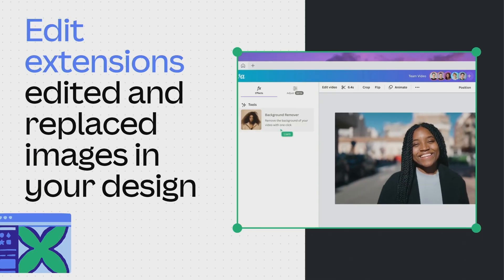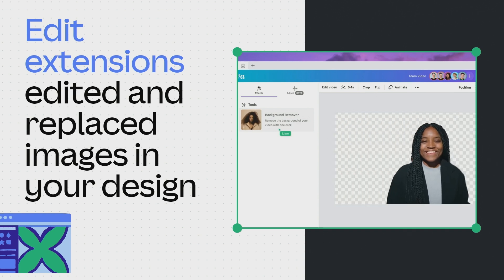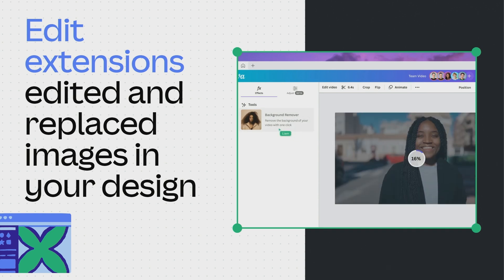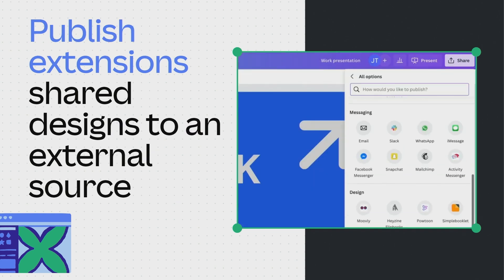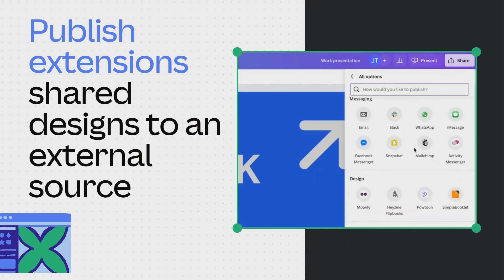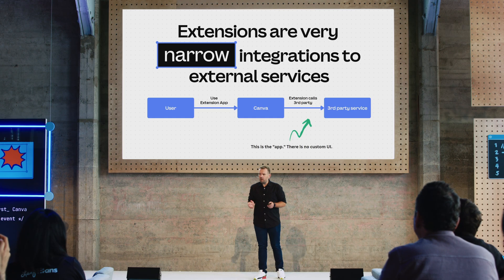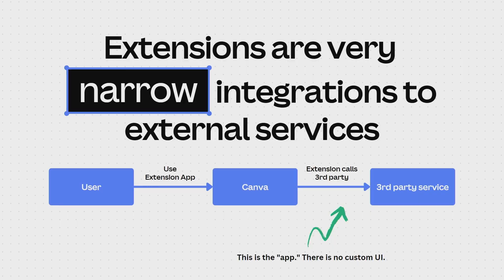Then with Edit Extensions, we enabled users to edit raster or vector images on platforms such as the incredibly successful Background Remover. And finally, Publish Extensions allowed users to publish their designs to any platform, such as Slack. To build an app, a developer only needed to create a simple web service endpoint and app config, and then the plug-in framework would take care of the rest.